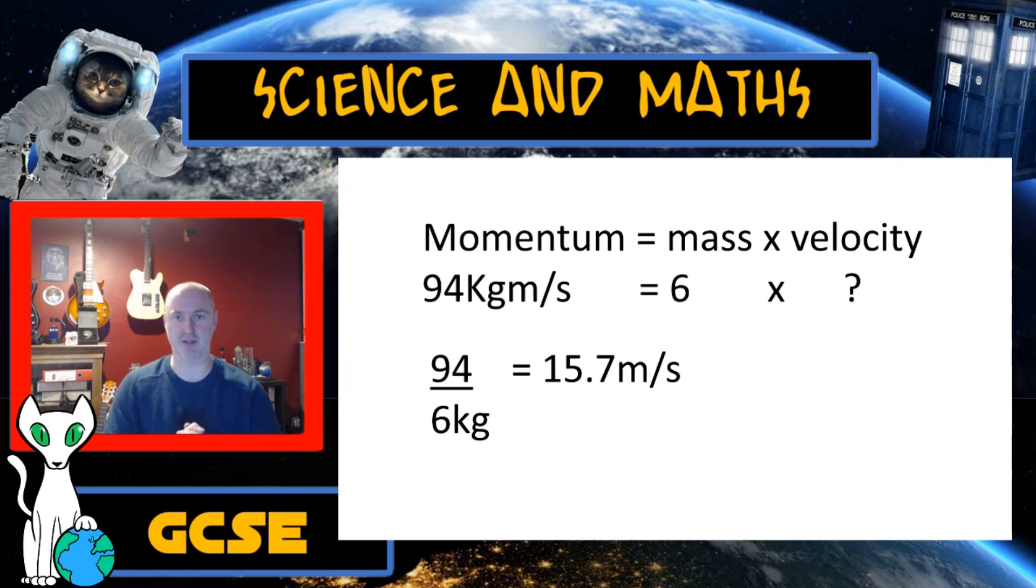But unless we are given a number of decimal points to go with, we're just going to go with one decimal point in our answer. Another good tip is if you are given decimal points in the question, just the number of decimal places in the question, then give your answer to the same number of decimal places that you're given in the question. And so I hope you got that. Bye!